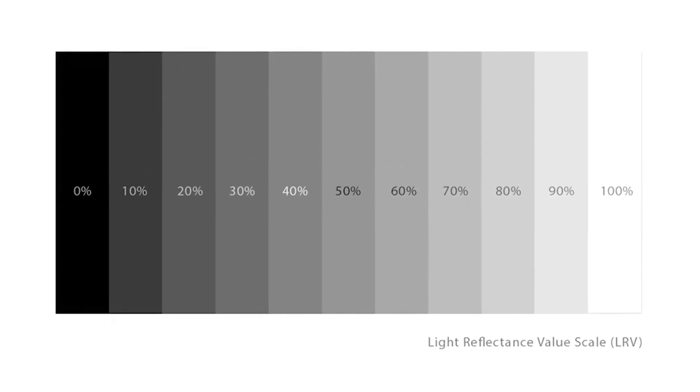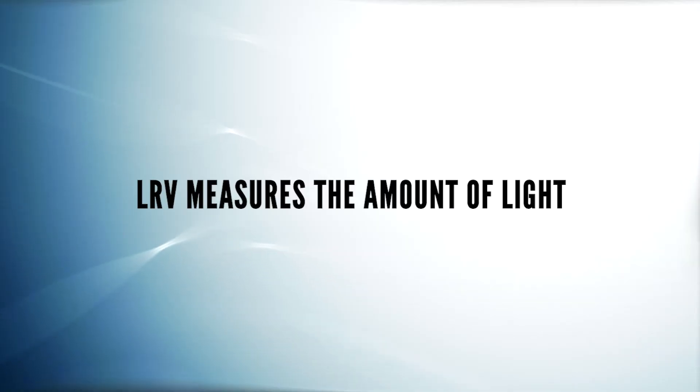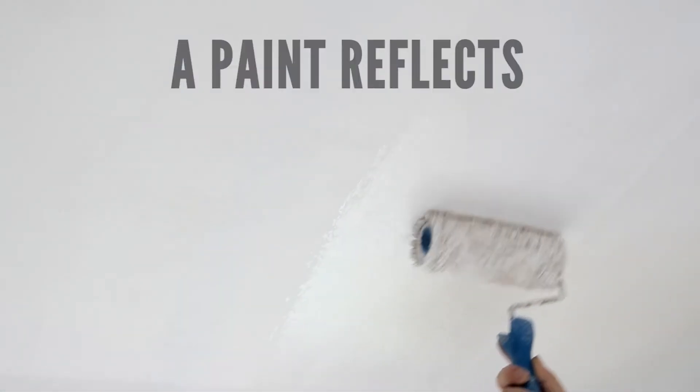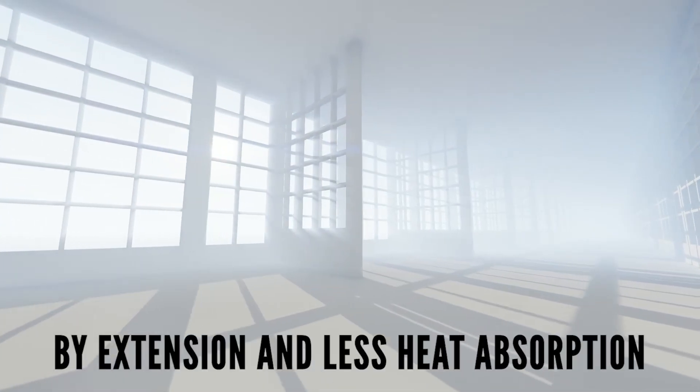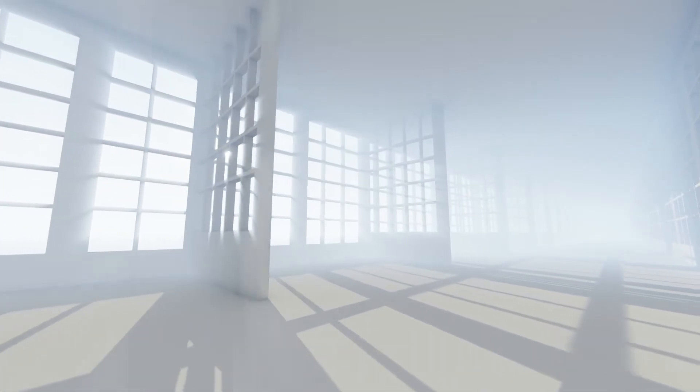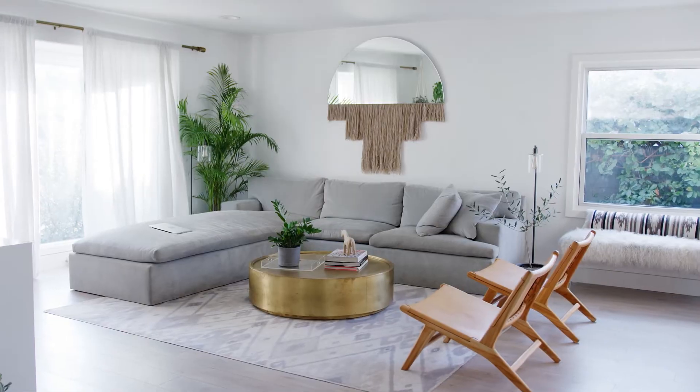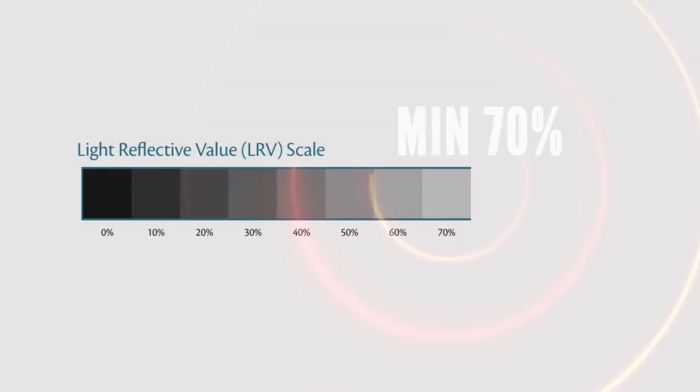LRV measures the amount of light a paint reflects. A higher LRV signifies greater light reflection and, by extension, less heat absorption. For most ceilings, the ideal paint will possess an LRV of at least 70.